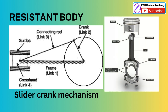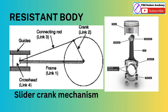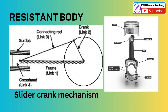A Resistant Body is one which is capable of transmitting the required forces with negligible deformation. For example, in the slider crank mechanism, the connecting rod, crank, crosshead, piston, and cylinder are all elements that are rigid and do not deform.